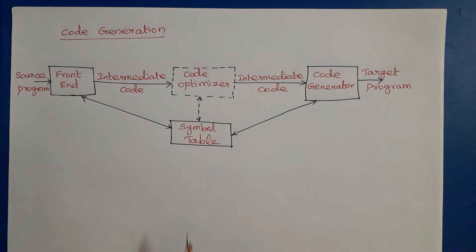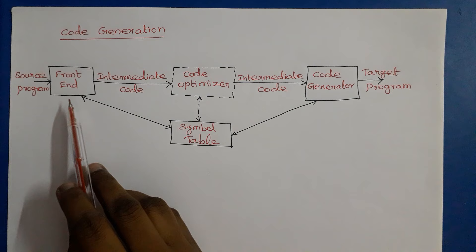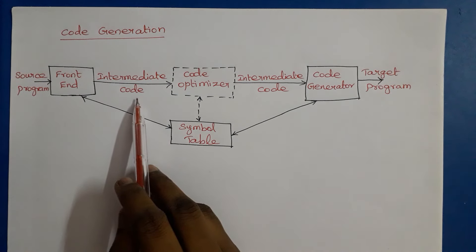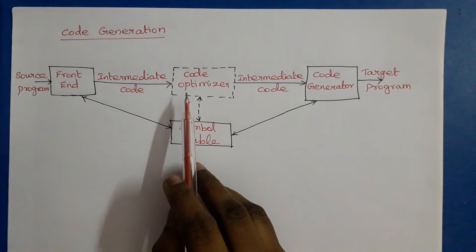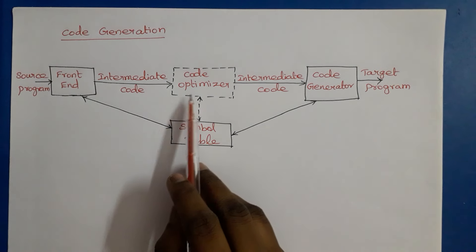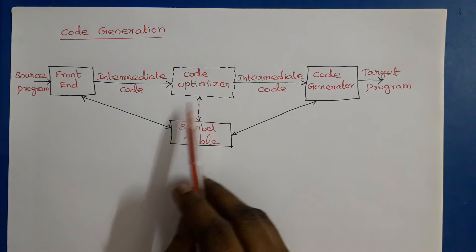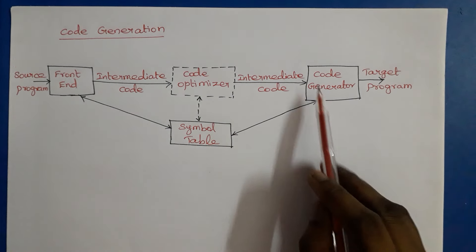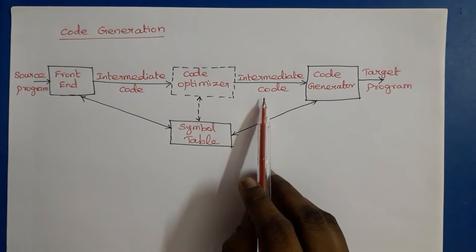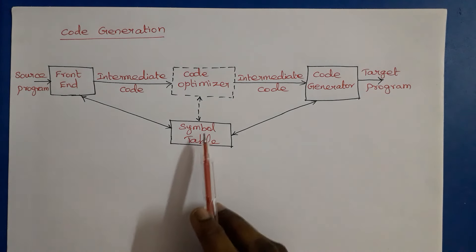In this video we are going to discuss about code generation and its issues. The code generator is the final phase of the compiler. The front end translates the source program into intermediate code, then the code optimizer phase — which is optional — optimizes the intermediate code. It can reduce the number of statements or replace complex operations with simpler ones, for example multiplication can be replaced by addition. The output of the optimizer is also intermediate code. The input to the code generator is an intermediate representation and the output is a target program, and all phases are connected with the symbol table.